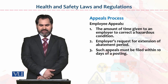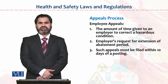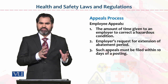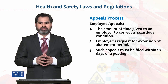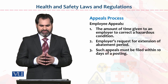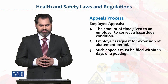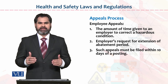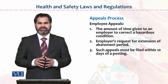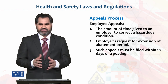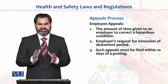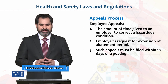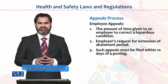Dear students, now we are discussing the appeals process. Sometimes within health and safety rules and regulations, top management comes and makes decisions, but after that, the employer is given the right to appeal. The amount of time given to an employer to correct a hazardous condition — sometimes an employer is given one week, two weeks, one month, or three months to correct it and then report to the top authorities. The employer can also request an extension of the abatement period.